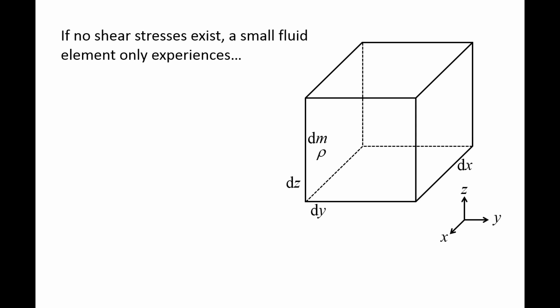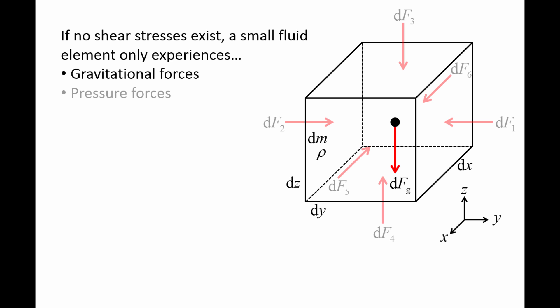Imagine a small fluid element of mass dm, constant density rho, and dimensions dx, dy, and dz. This element is part of a fluid where no shearing stresses exist — that is, fluid elements are not sliding against each other. A small fluid element would experience a small gravitational force dfg, and small pressure forces on each of the six faces.